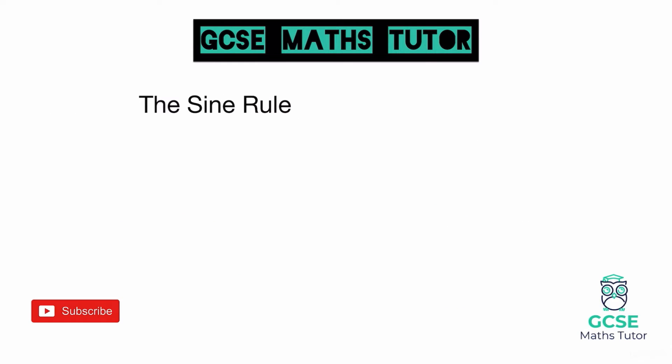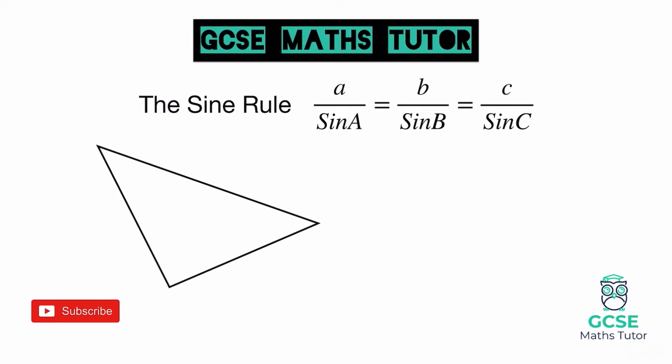Now we're going to look at the sine rule. The sine rule is: a over sine A equals b over sine B equals c over sine C. We use this when looking at non-right-angled triangles, although it can be used with right-angled triangles too. When looking at a triangle with the sine rule, you want to identify pairs of opposites — opposite the 30 degrees we have the length we're looking for, and opposite 62 degrees we have a known length. We have two pairs of opposites, so we can use the sine rule.